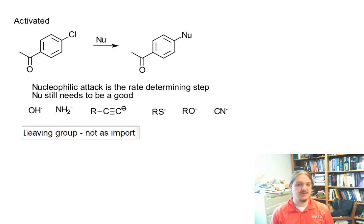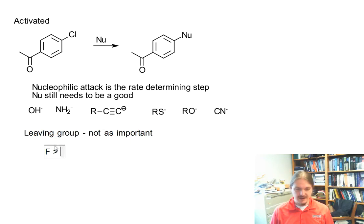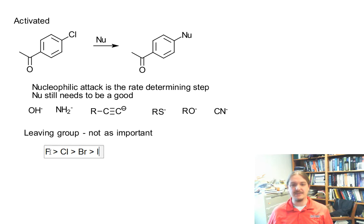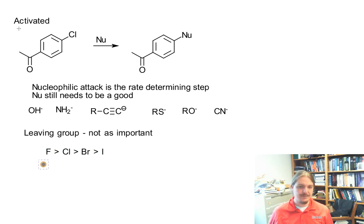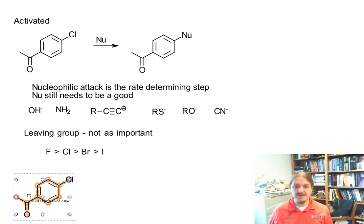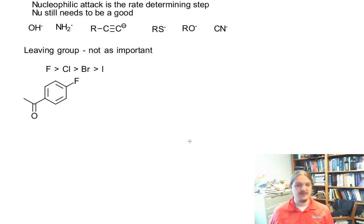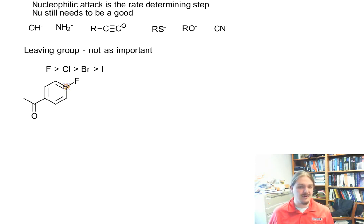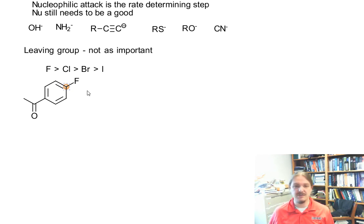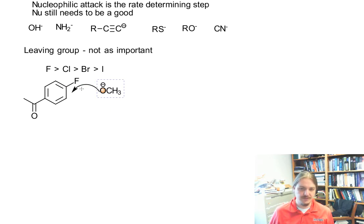The leaving group is not as important because it's not involved in the rate-determining step. And in fact, in the halogens, contrary to the SN1 and SN2 reactions, fluorine is actually the best leaving group here. That is because fluorine helps the rate-determining step along. When we have a fluorine here, this position is even more electron-deficient than you might expect. Let's use the methoxide anion as my nucleophile here.